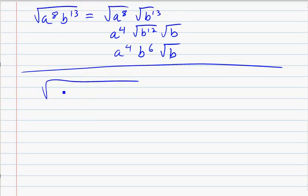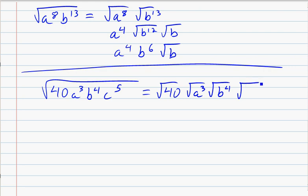And if we throw a number into the problem, 40 a cubed, b to the 4th, c to the 5th. Properties of radicals tells me I can break this apart into separate problems. The square root of 40, the square root of a cubed, the square root of b to the 4th, the square root of c to the 5th. Four separate radicals. I'm going to simplify each one. We talked about how to do square root of 40 in the last lesson. I could do a factor tree, and you end up with the square root of 4 times the square root of 10.